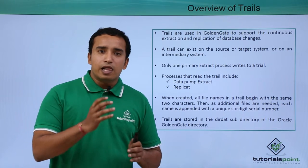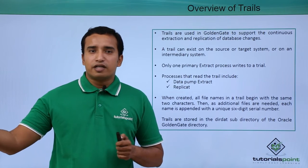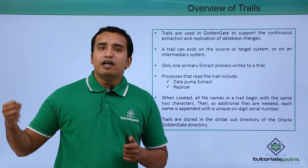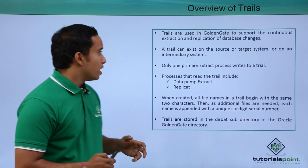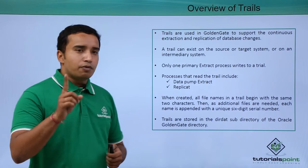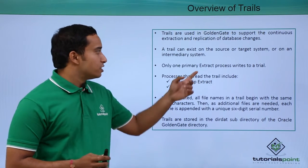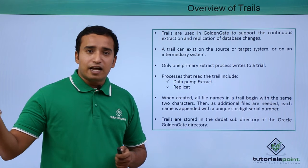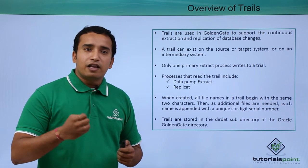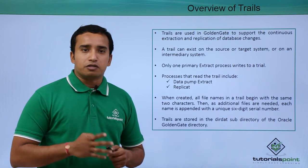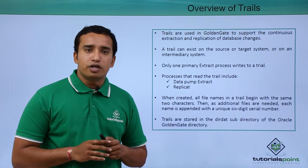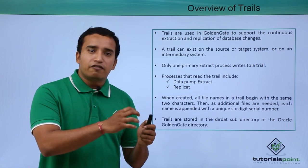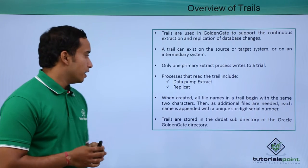It is a physical file, and the same file is transferred to the target site. The target site replicate will read the trail file and replicate the data. There is only one process that can write to the trail file, which is the extract process. At the target site, the trail file is read by the replicate process. The data pump process is an optional extract process which pumps the trail file from source to target.